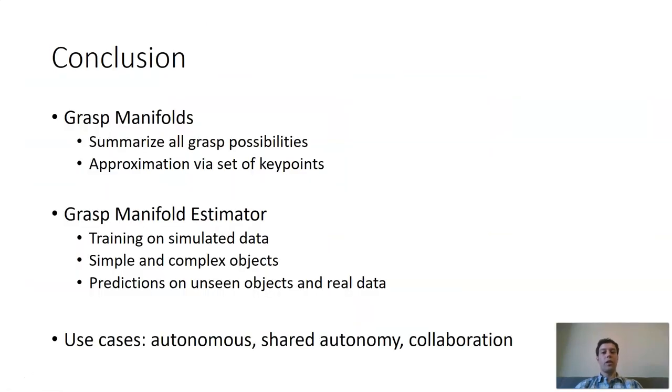In conclusion, our grasp manifolds summarize all possible grasps for a given object. We approximated this via a set of key points that we tried to predict via our grasp manifold estimator grasp.me. We trained on simulated data only and compared the results for simple and complex objects and could even predict grasp manifolds for unseen objects and real data. The use cases for grasp manifolds could be autonomous working robots, shared autonomy tasks or collaboration tasks.